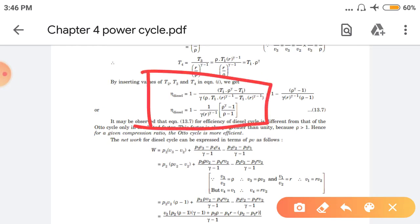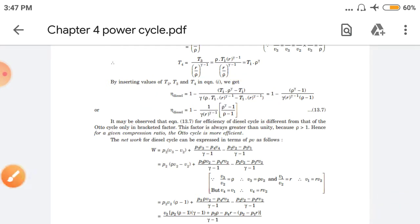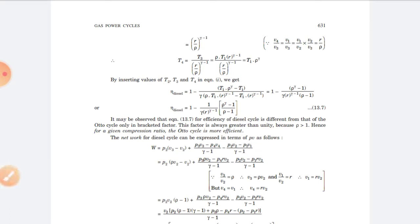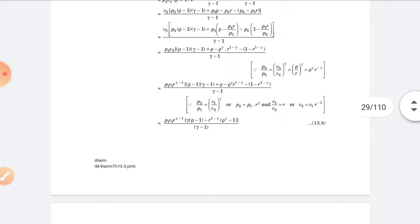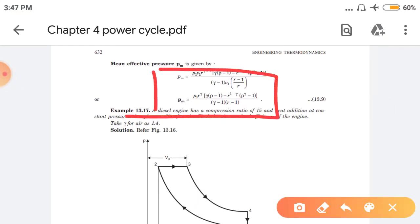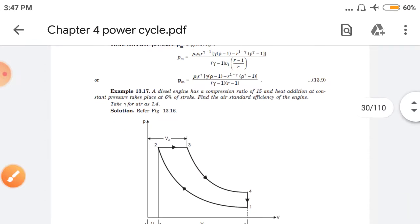The efficiency formula for the diesel engine involves the cutoff ratio (rho). So efficiency of the diesel engine is dependent on the cutoff ratio and compression ratio. After that we have seen mean effective pressure. Today we will see some numericals on the diesel cycle.